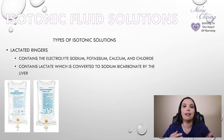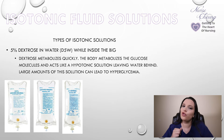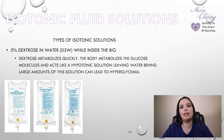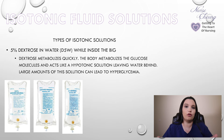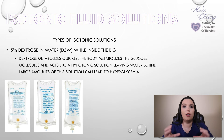We've also got lactated Ringers, which contains electrolytes such as sodium, potassium, calcium, and chloride, and it also has lactate, which is converted by the liver into sodium bicarbonate. Then there's the little trickster of the isotonic group: 5% dextrose in water, D5W. While the solution is still in the bag, it is considered isotonic. However, when given to a patient, the dextrose metabolizes extremely quickly — the body metabolizes the glucose molecules and it acts like a hypotonic solution, leaving the body with only water. So while D5W in the bag is isotonic, as soon as it is given to the patient, it is hypotonic.